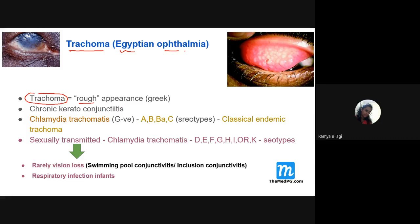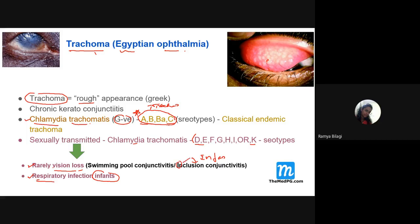Trachoma is a bacterial infection caused by Chlamydia trachomatis. It is a gram-negative bacteria, and different serotypes are involved. In examinations they may ask which serotypes are linked with trachoma — the answer is A, B, and C. These are the three serotypes exclusively linked with trachoma. Serotypes D to K of the same Chlamydia are usually sexually transmitted and rarely involved in blindness or vision loss. They are mainly linked with genital infections and respiratory infections, and more commonly infect infants.